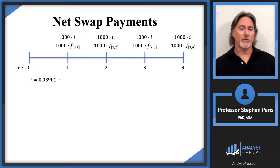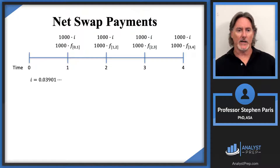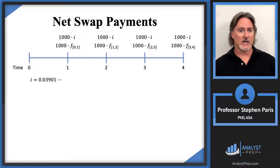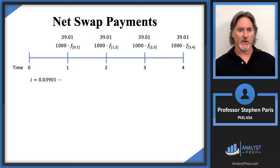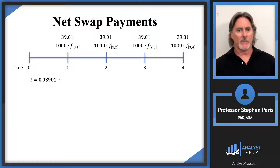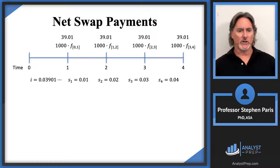Now I know what the I value is. All of those payments that Beth is paying — the 1,000 times I — will now be 1,000 times 0.03901, so that's $39.01. Beth is going to be paying $39.01 at the end of every year for the next four years. Now let's look at those forward rates. The one-year spot rate was 1%, the two-year spot rate is 2%, and so forth.